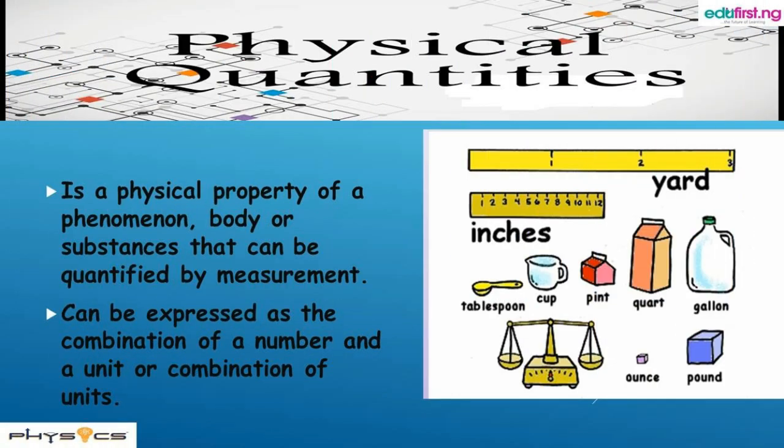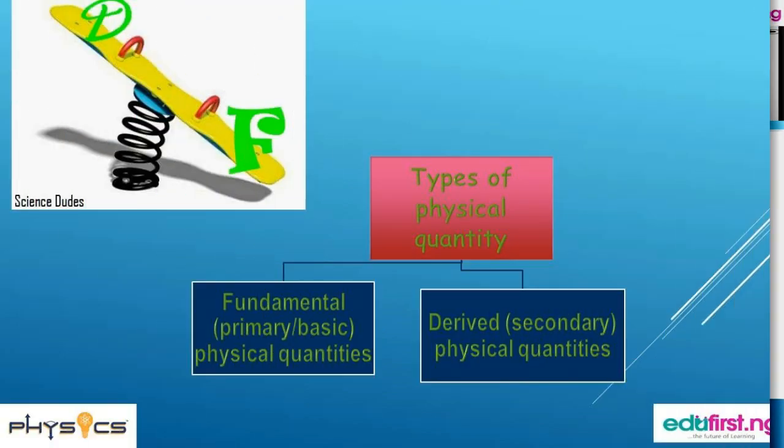What is physical quantity? Physical quantity is a physical property of a phenomenon, body, or substance that can be quantified by measurement. Physical quantity can be expressed as a combination of a number and a unit. We have two types of physical quantity.